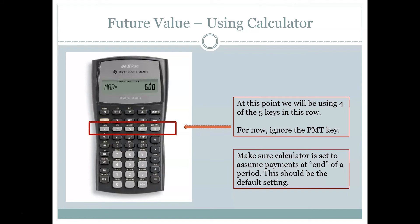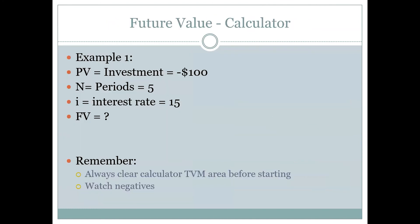This is the calculator I'm going to teach in this class and demonstrate in all the example problems. You can use any calculator you want, but this is the one I'll show. For now we're going to ignore the payment key, but you'll recognize the time value of money keys — the gray row showing FV, PV, PMT, N, and IY. Those represent the inputs: FV is future value, PV is present value, N is number of periods, and IY is the rate of return.